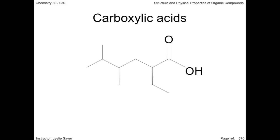The carboxyl group is on the right side, followed by an ethyl group and two methyl groups. The 6-carbon chain makes this a hexane, with the ethyl group at the second carbon and the methyl groups at carbons 4 and 5. We have 2-ethyl-4,5-dimethylhexanoic acid.